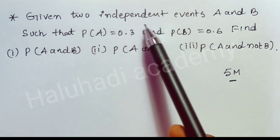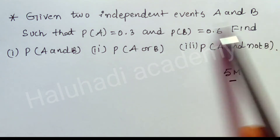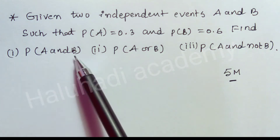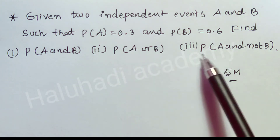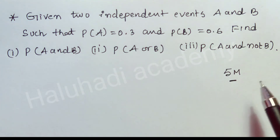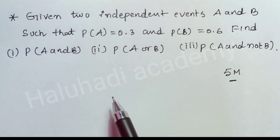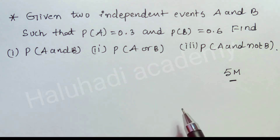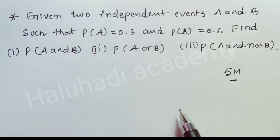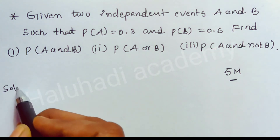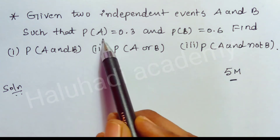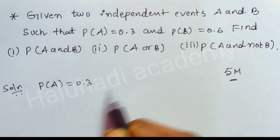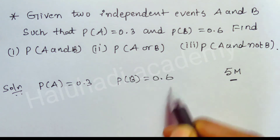This problem is: given two independent events A and B such that P of A is equal to 0.3 and P of B is equal to 0.6. Find: first, P of A and B; second, P of A or B; third, P of A and NOT B.